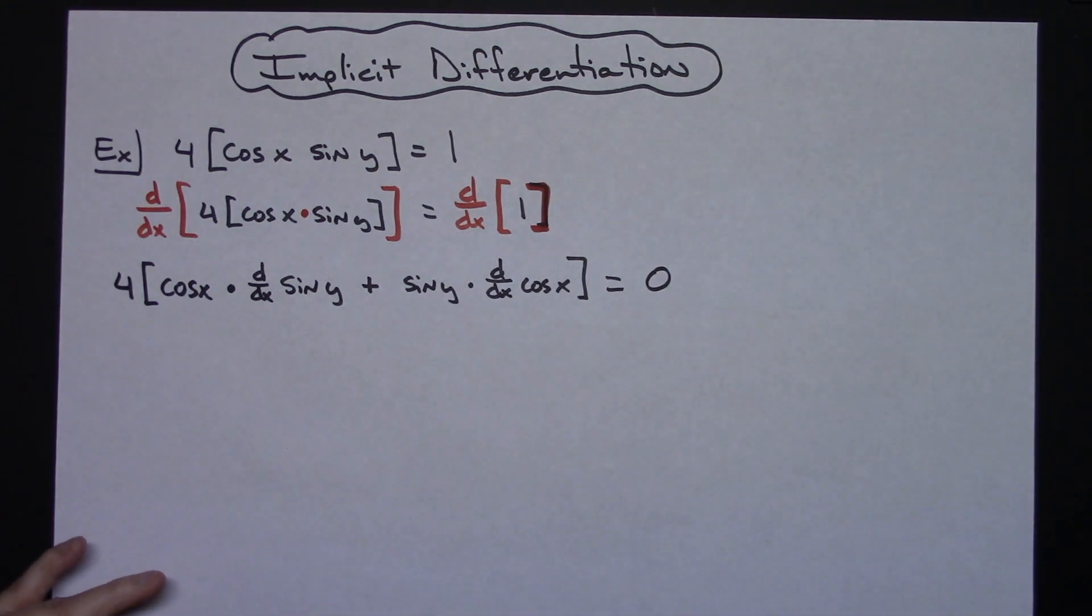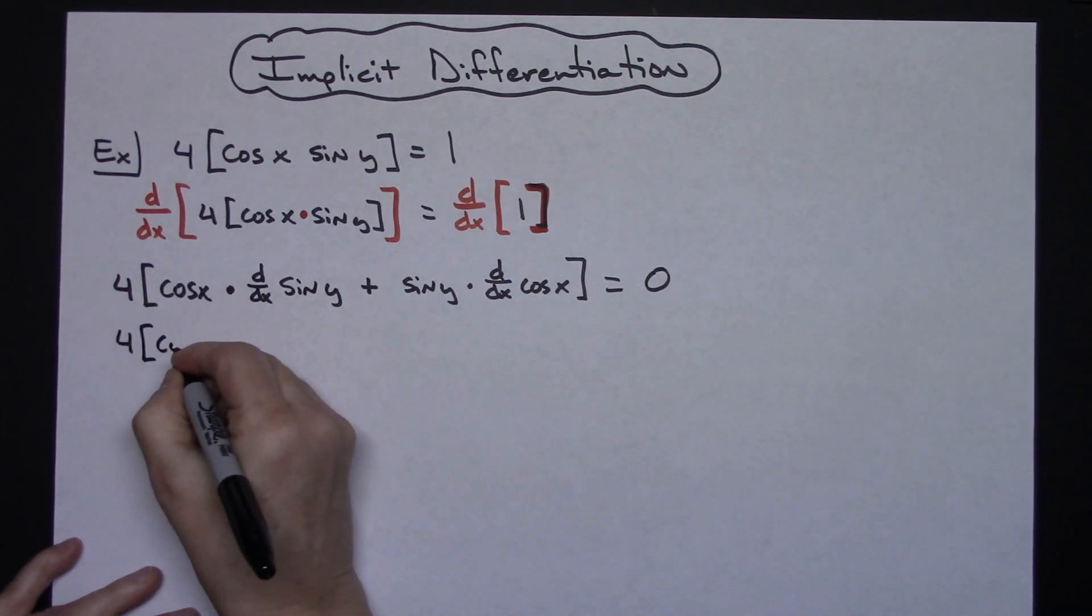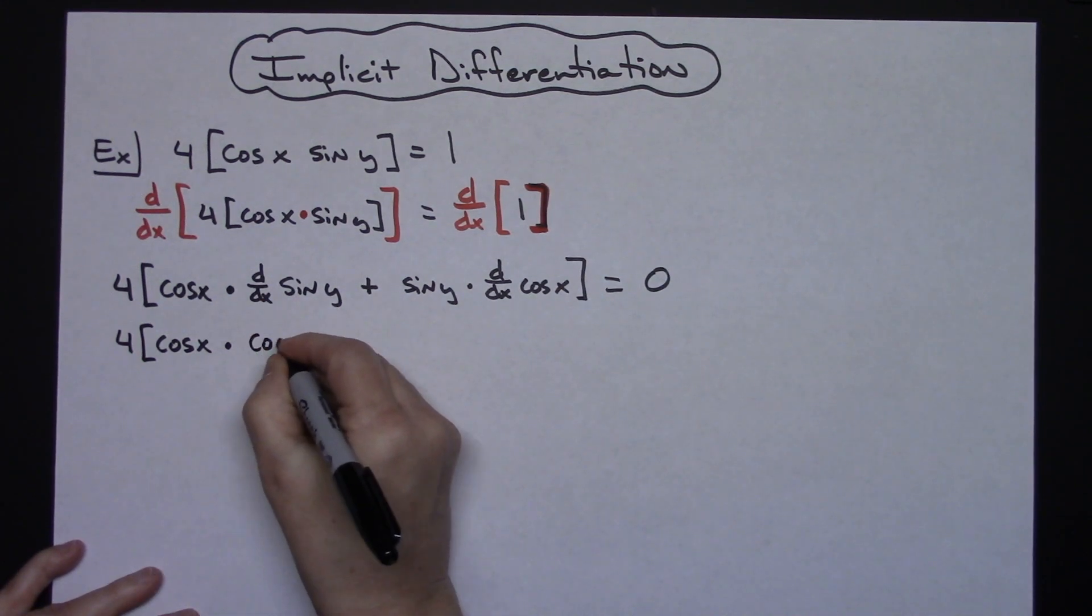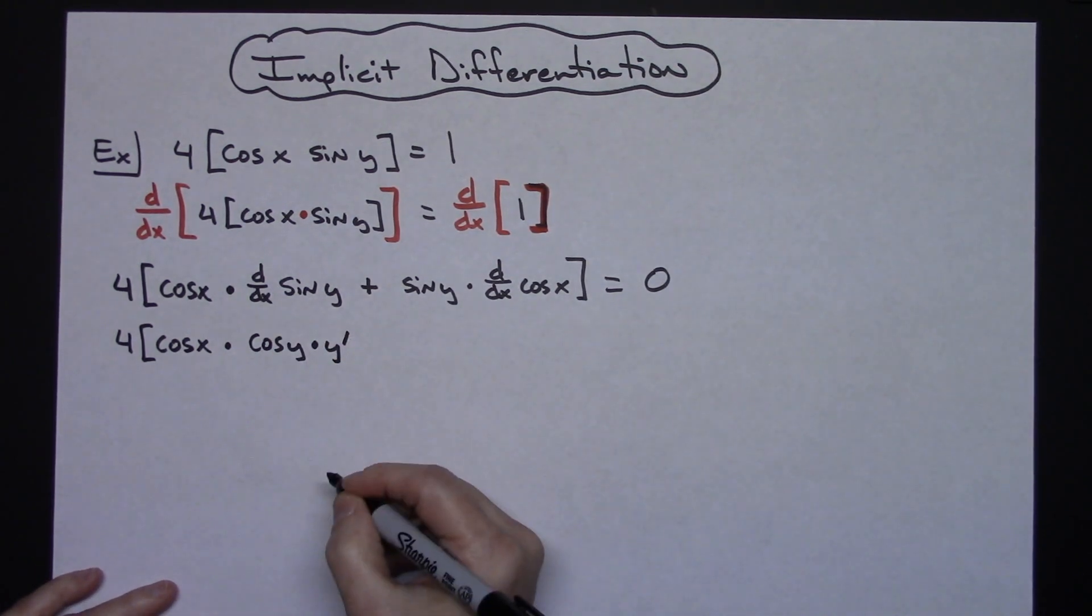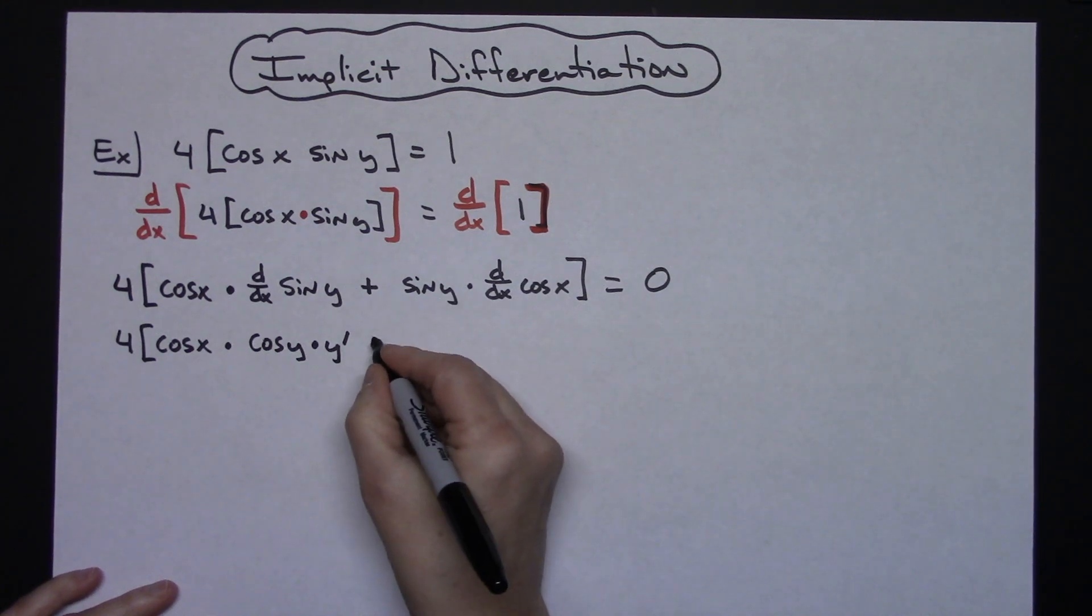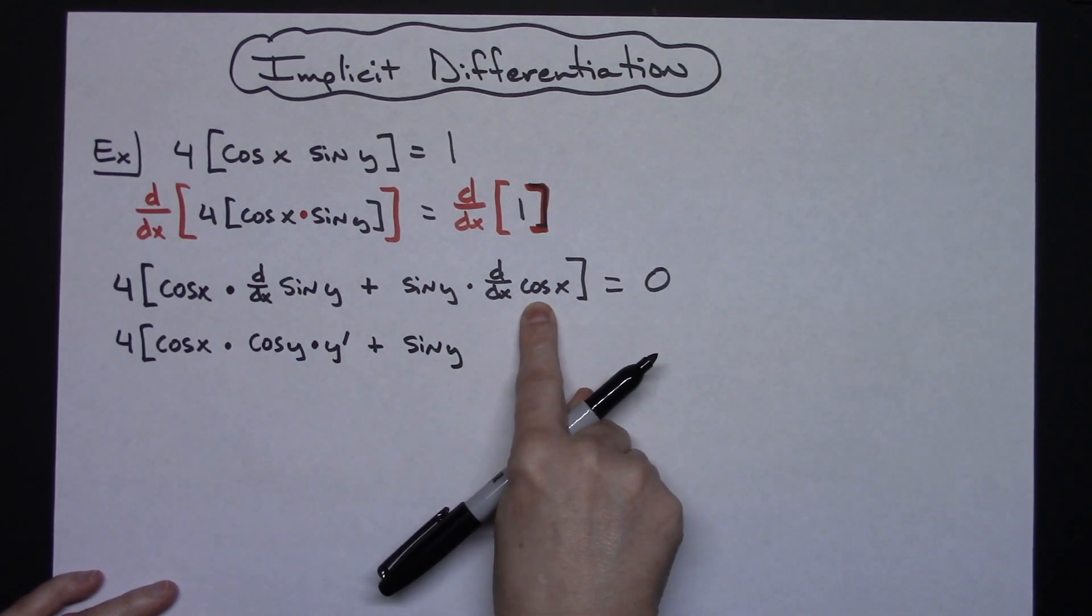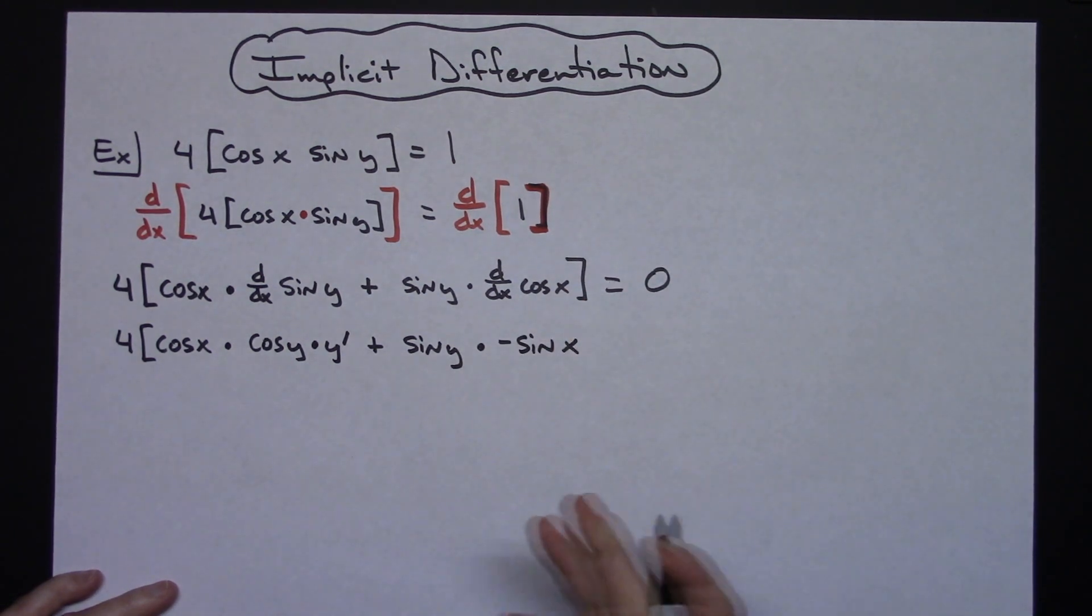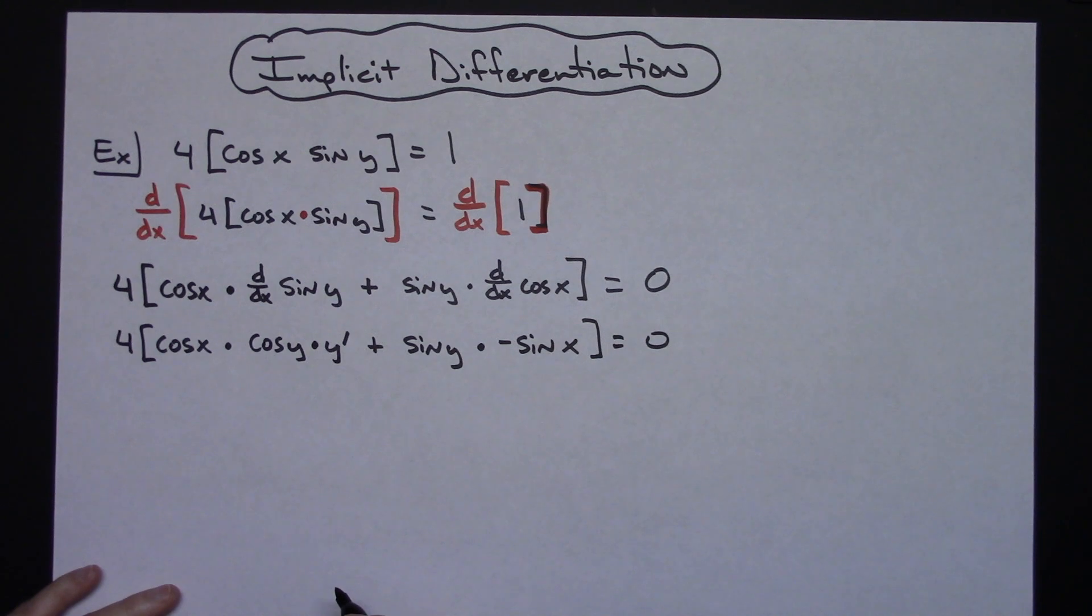All right now in my next line I'm actually going to do those two derivatives. My four is going to stay put. Cosine x is going to stay put. Derivative of sine is cosine, so cosine y. Now we've got to do the chain since it's implicit differentiation and I use y primes. A lot of people here will use a dy over dx to indicate that first derivative, that's fine. All right then we'll have the sine y. Derivative of cosine is going to be a negative sine so times negative sine with the x and since it's an x we don't have any chain there and then equal to zero.